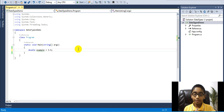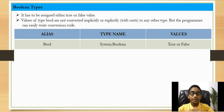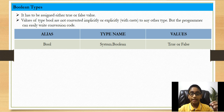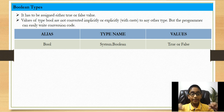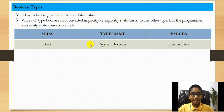Next we're going to continue on to Boolean types. Boolean types must be assigned either true or false values. Values of type Boolean are not converted implicitly or explicitly to any other type, but the programmer can write conversion code. We basically use Boolean to store true or false values — for example, a yes or no checkbox.